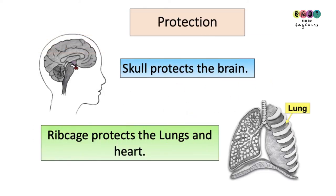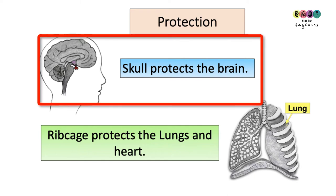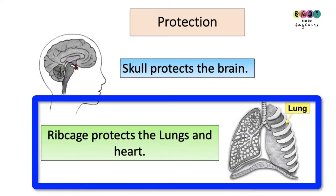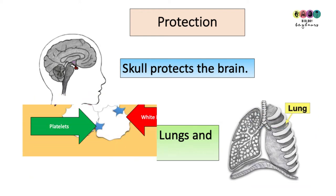Function number three is protection. You've got the skull protecting the brain and you've got the rib cage protecting the lungs and the heart. These bony structures protect these vital organs.